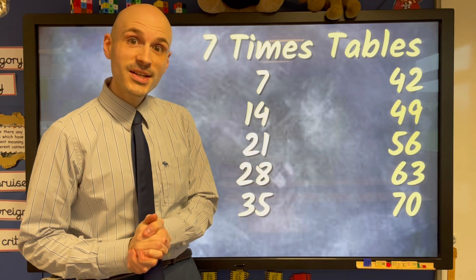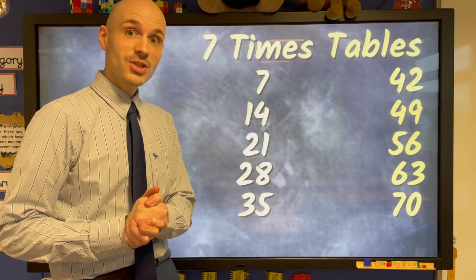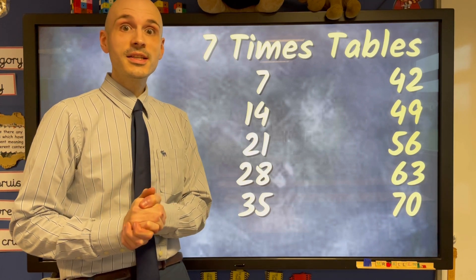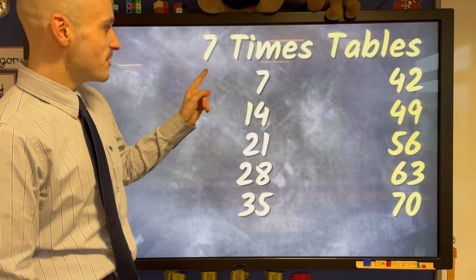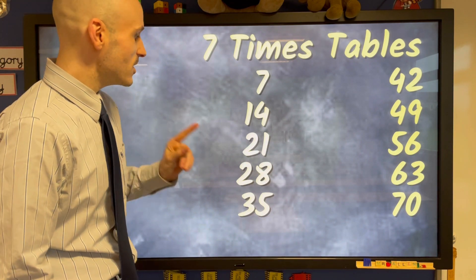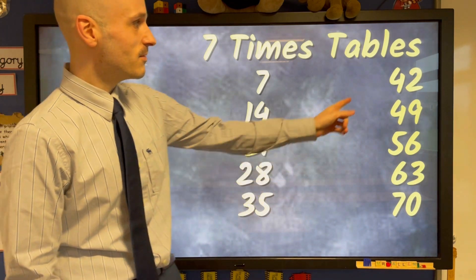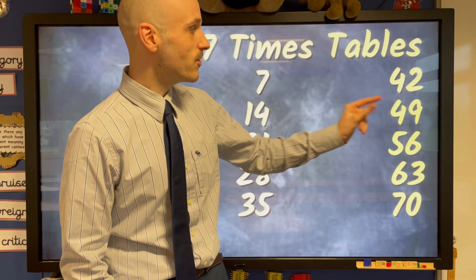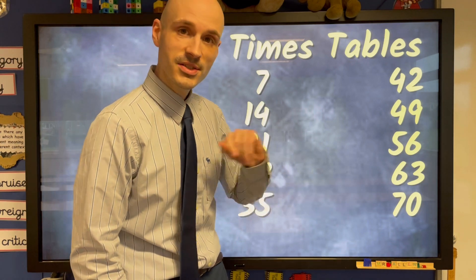Okay, here we go then guys — our seven times table to the tune of Yankee Doodle. Here we go: 7, 14, 21, 28, 35, 42, 49, 56, 63, 70.